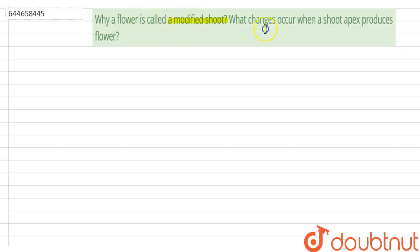a flower is called a modified shoot? What changes occur when a shoot apex produces flower? A flower is called a modified shoot where the shoot apical meristem changes to floral meristem. The thalamus of the flower